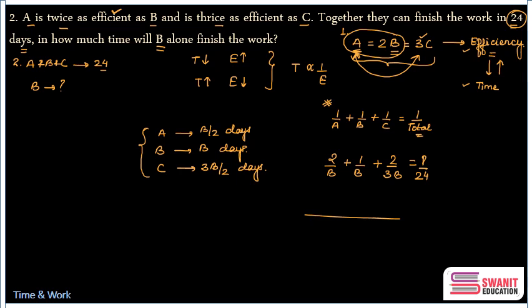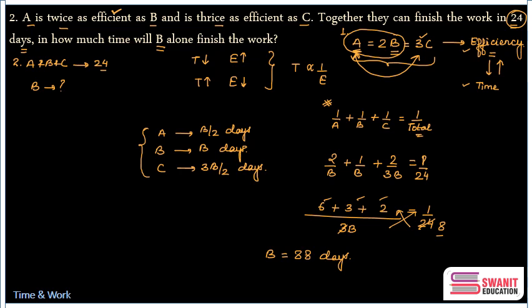Taking LCM = 3B: (6 + 3 + 2) / 3B = 1/24. So 11/3B = 1/24. Cancelling 3 and 24 gives 11/B = 1/8. Cross-multiplying: B = 88 days. That's the answer — B alone takes 88 days. As a bonus: A takes B/2 = 44 days, and C takes 3B/2 = 132 days.